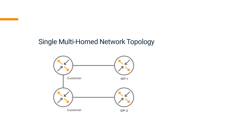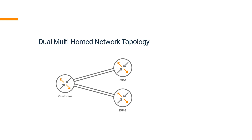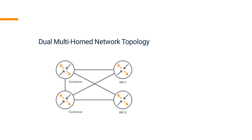We can further improve redundancy by adding a second router on the customer side. The redundancy of the single multi-home design can be improved with additional links between a customer and ISPs — if one of the links fails, internet connectivity through the same ISP is maintained using the backup link. Finally, the dual multi-home design provides the highest redundancy of links, customers, and ISPs, but is also typically the most expensive solution.